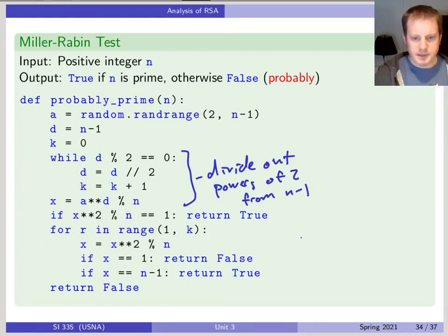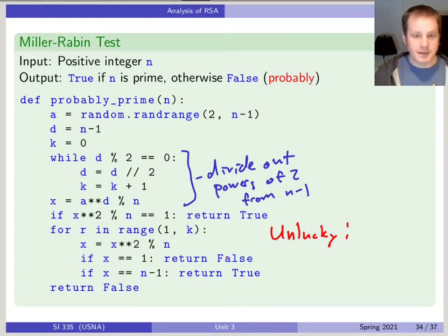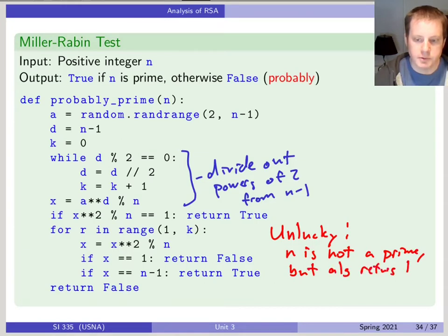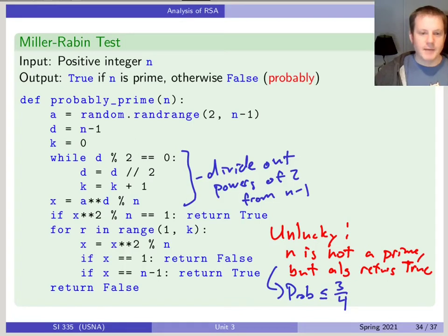This particular algorithm doesn't always succeed — it's called a probable prime test. We can definitely get unlucky. If the algorithm returns false, that means it's definitely not a prime. But if it returns true, it might actually be composite. The unlucky situation is that n is not a prime but this algorithm returns true. That is possible, but the probability of that happening is less than three-fourths.